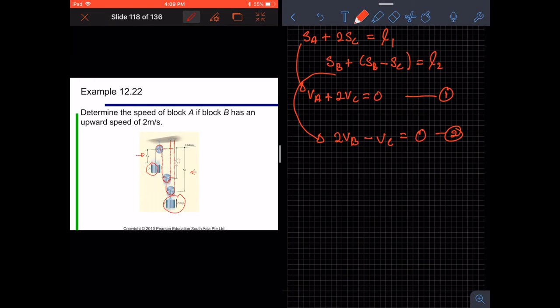So this is going to be 2 times equation 2. We are going to have VA plus 2VC equals 0, this is number 1. And then this is going to be 4VB minus 2VC equals 0, this is number 3. So when we eliminate the VC, we are going to have 4VB plus VA equals 0.